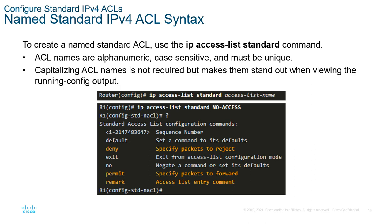Sequence numbers are a way to align what our ACL is doing. The order does matter, so if we need to modify the ACL, we can actually manipulate those sequence numbers to reorder the structure of an ACL.